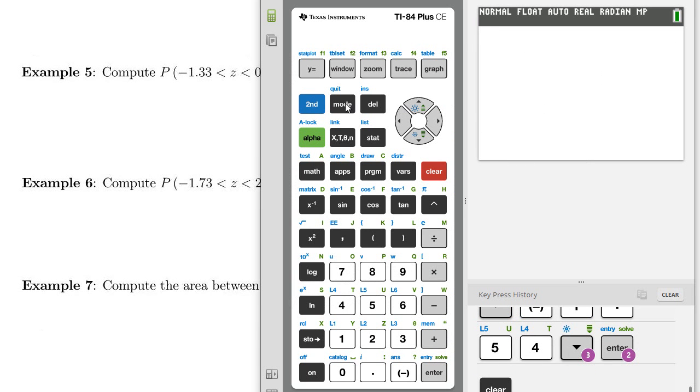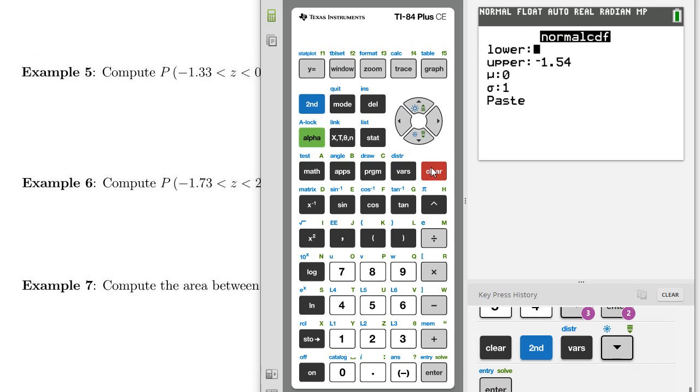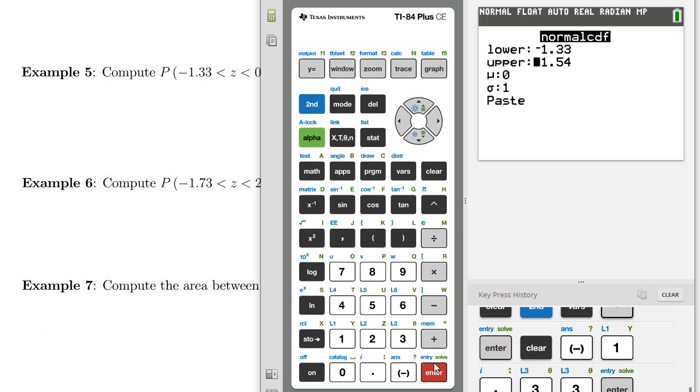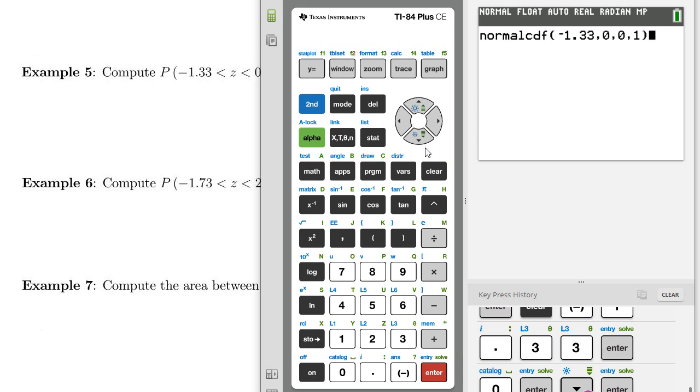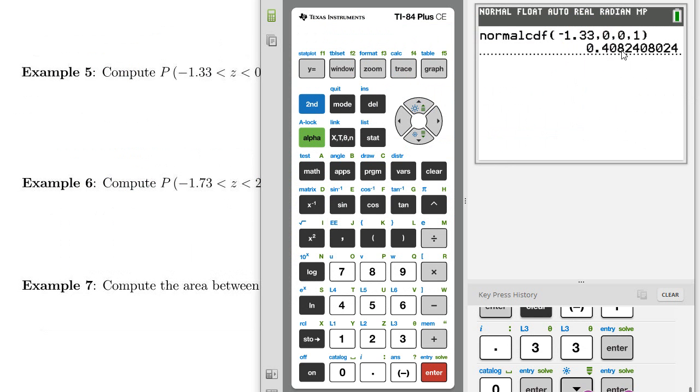We want to go to the distribution menu again, second variables, go to normal CDF, and then we want our lower bound is negative 1.33, and then our upper bound of 0. Come down and paste that, and enter. 0.4082. So this is normal CDF, and then we did negative 1.33 to 0, that's lower bound, upper bound, and we got 4082.